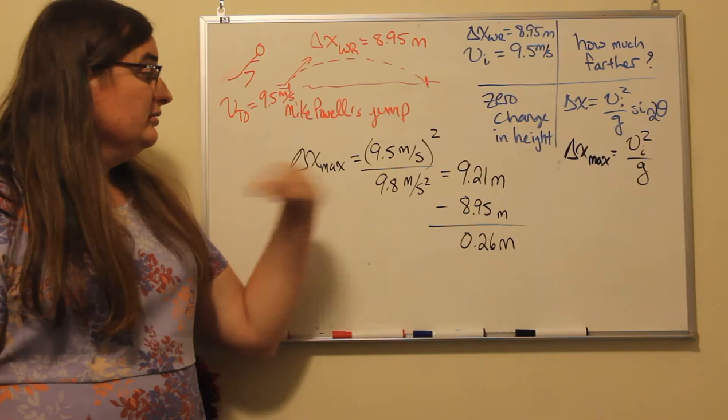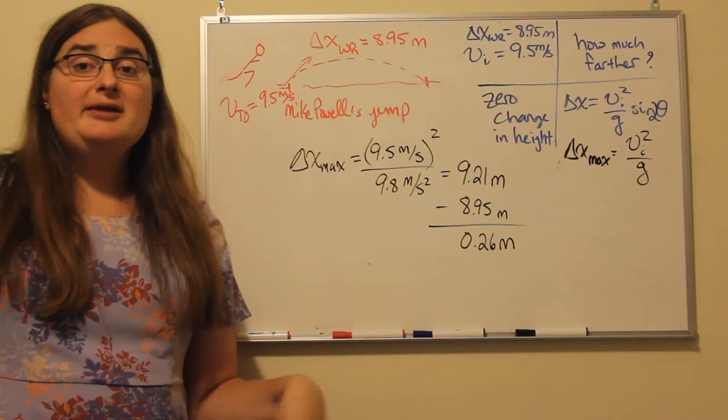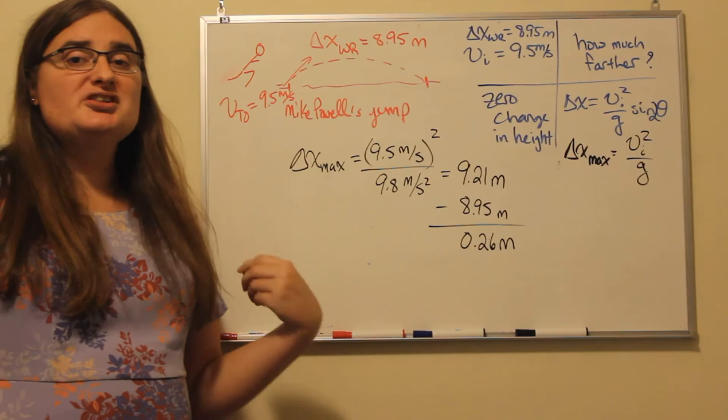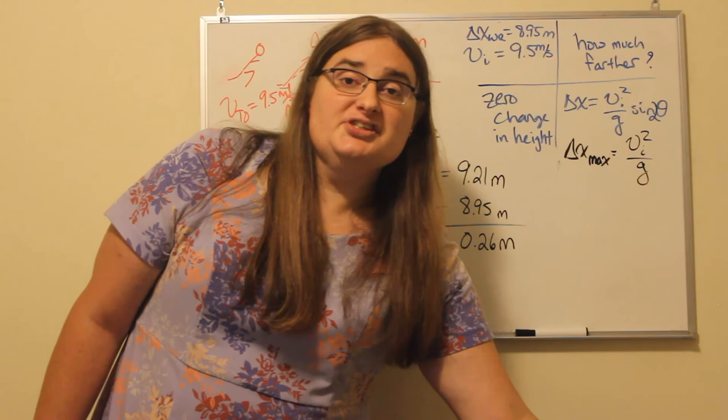The world record was 8.95 meters. If you subtract those two, 9.21 meters minus 8.95 meters means that Mike Powell came within 26 centimeters, 0.26 meters, of the theoretical maximum jump without the effects of air resistance.